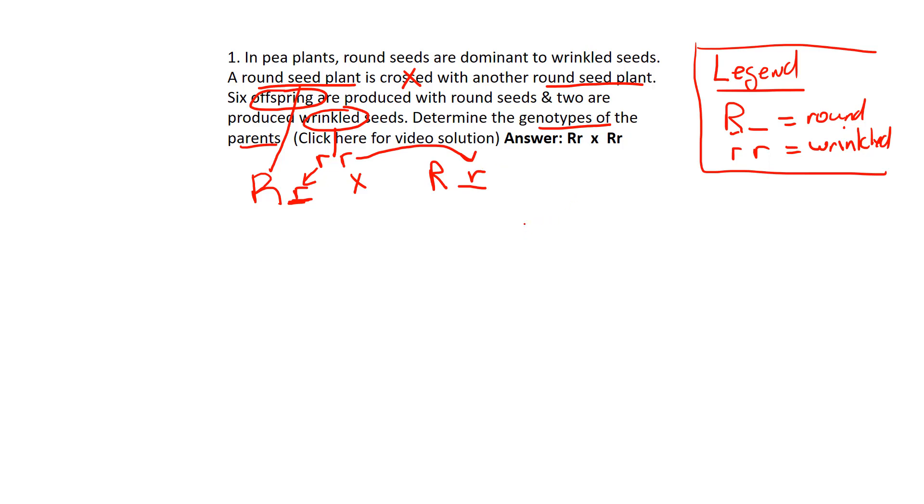So now what we've done by looking at that wrinkled offspring, and again that's your Sherlock Holmes clue right there, that enables us to be able to fill in the unknowns here. So the question says determine the genotype of the parents. We know that one parent is heterozygous and so is the other.